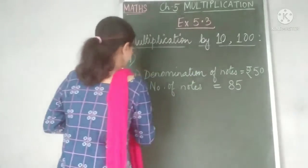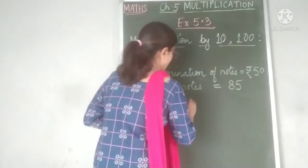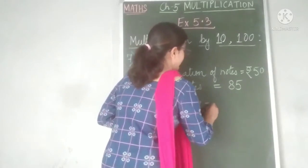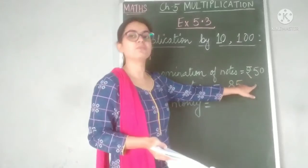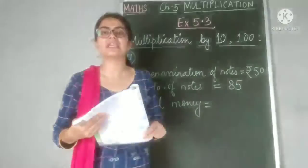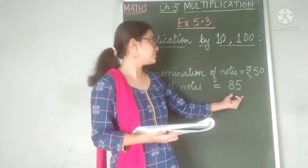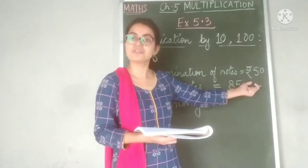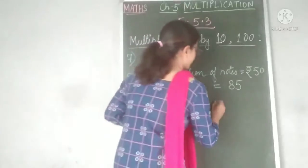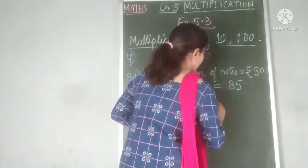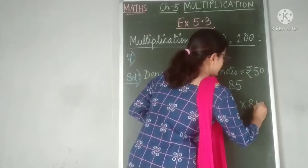Therefore, total money equals — if he has 85, 50 rupee notes, then the total money he has is equal to 85 multiplied by 50 rupees. So we write rupees 50 multiplied by 85.